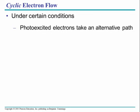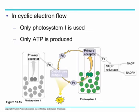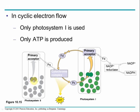Sometimes, instead of non-cyclic electron flow, there is cyclic electron flow. This occurs under extreme conditions — think of a drought — where only photosystem I gets used and only ATP is produced; we don't get NADPH. If you don't have enough water to constantly add new electrons in non-cyclic flow, you can do cyclic electron flow where electrons cycle back and forth through this series, each time slowly making ATP.